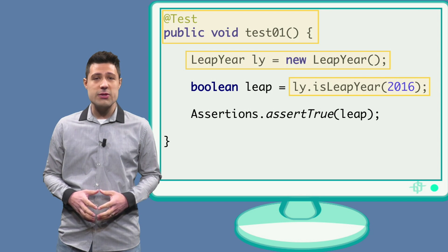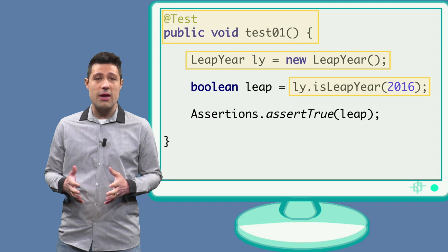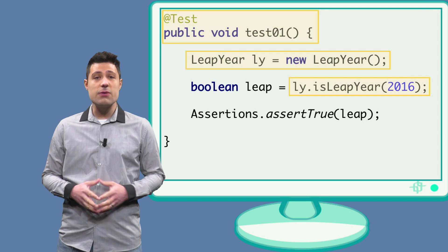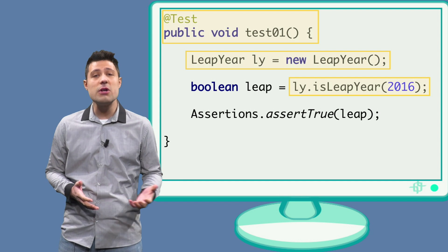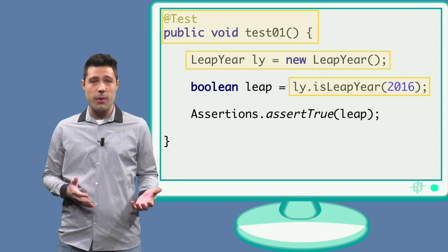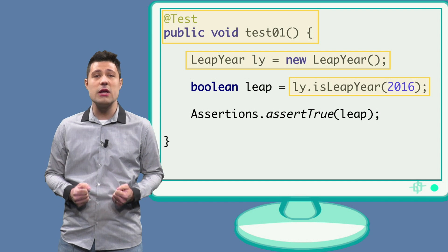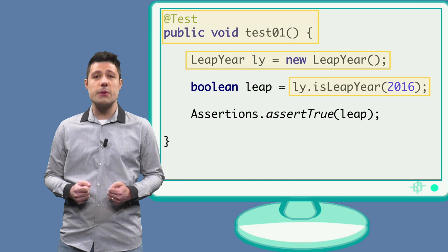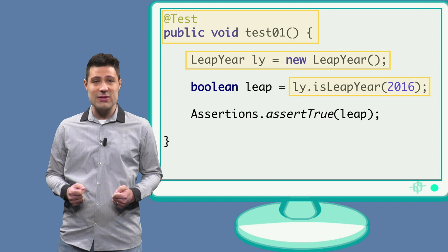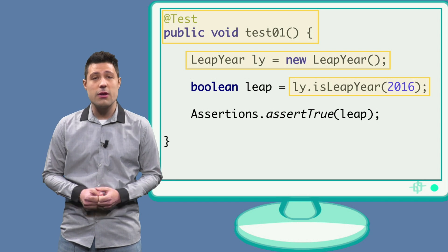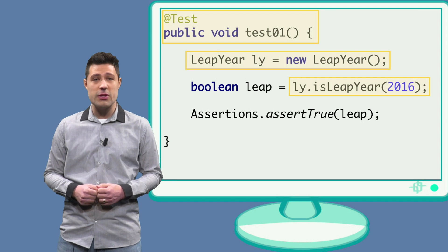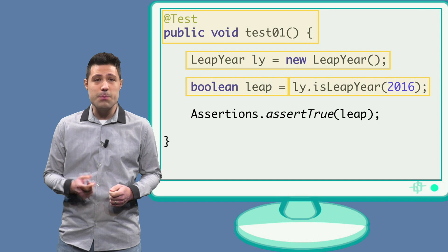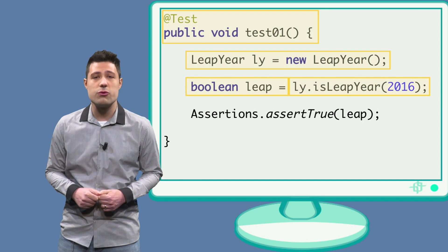The second step is to execute the method that contains the behavior we want to test, and to do it we have to pass the year as a parameter. Remember that we are testing the first partition — leap years that are divisible by 4 and not divisible by 100. One concrete example for this partition is the year 2016. As this year is a leap year, the correct behavior would be for the boolean leap to equal true.